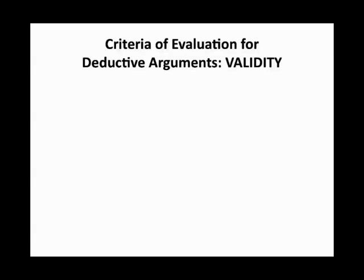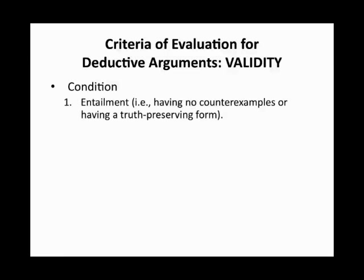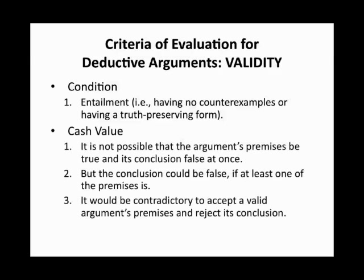The first criterion we examined for deductive arguments was the condition that the premises in a deduction entail their conclusion — meaning we can find no counterexamples and we have a form that preserves the truth. The cash value here is that it's not possible for the argument's premises to be true and its conclusion false at the same time, though the conclusion could be false if at least one premise is. Finally, it would be contradictory to accept a valid argument's premises and reject its conclusion.